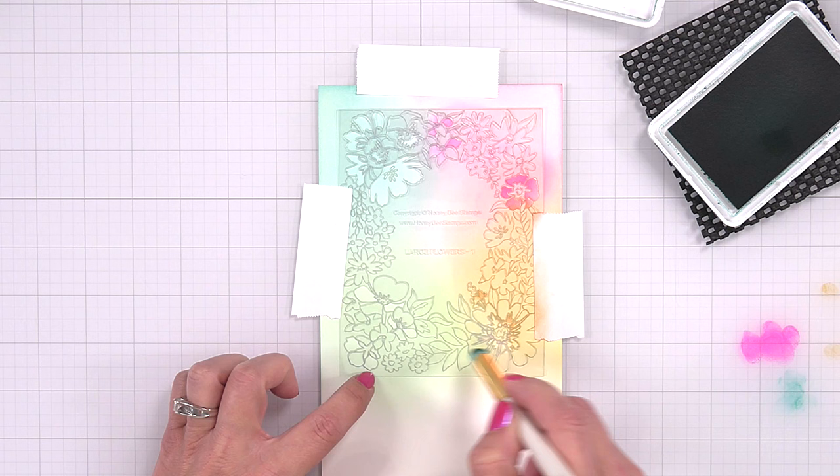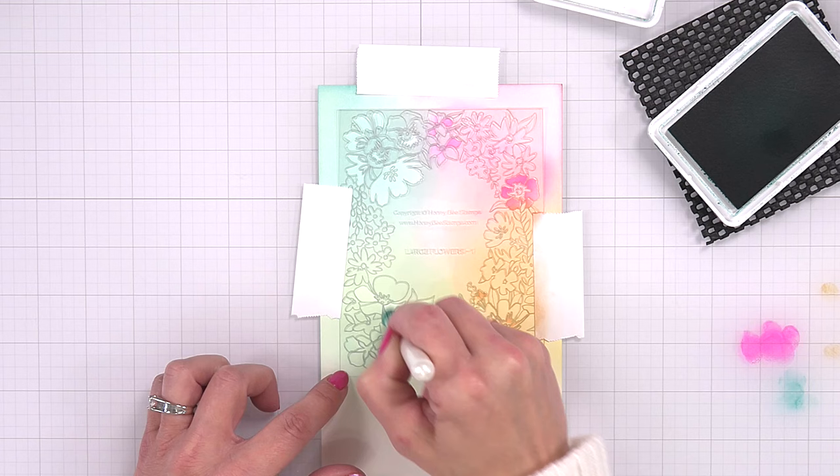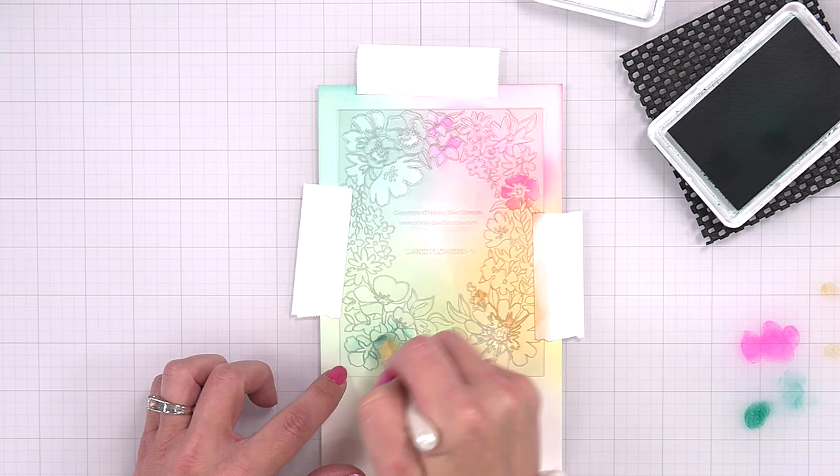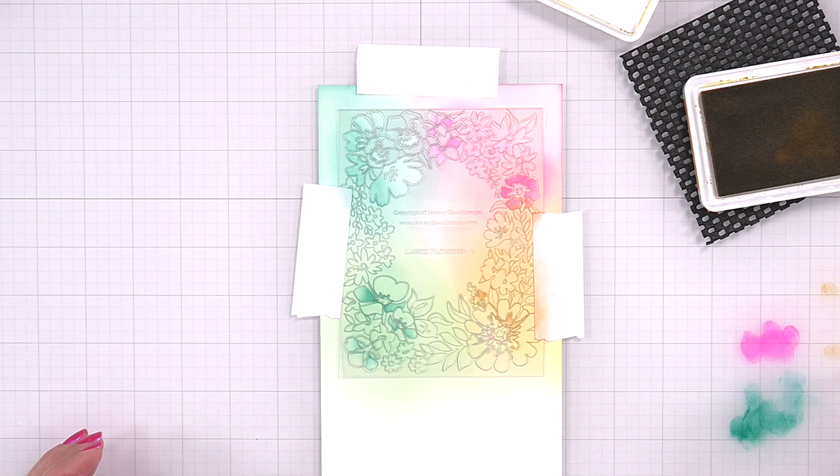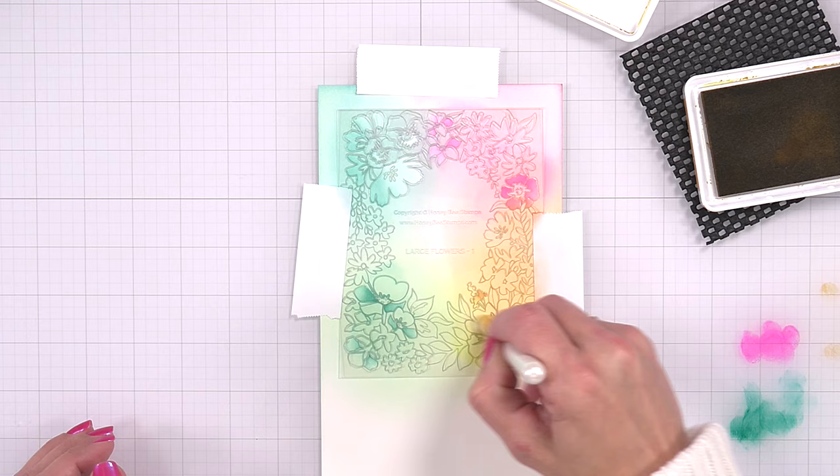For my next color here, I brought in juniper. I jumped the gun a little bit. I really should have came in with my yellow. I did not want to add the juniper right next to the orange because that would not look good once it's blended together. So I kind of just moved ahead a little bit and went over that sea glass area with the juniper, but I did come back in and bring in my yellow.